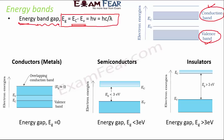Based on this band gap, there are three categories: conductors, semiconductors, and insulators. In conductors, the conduction band and valence band overlap, so the energy gap is zero. As a result, there are a lot of electrons in the conduction band, the electrons are free to move, and therefore conductors conduct current.